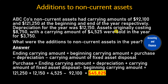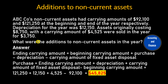Assets originally costing $8,750 with a carrying amount of $4,525 were sold in the year for $3,750. What were the additions to non-current assets in the year?